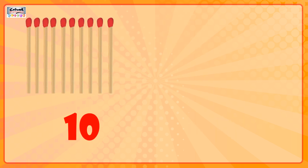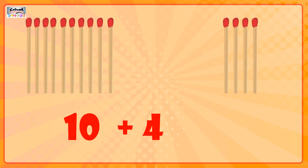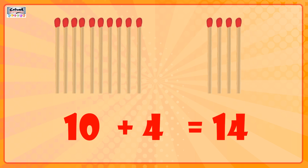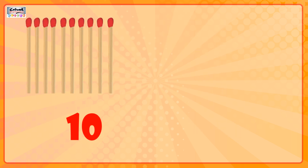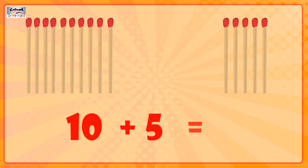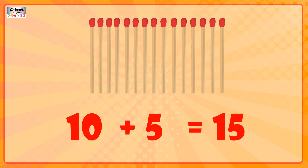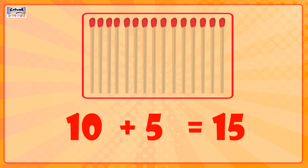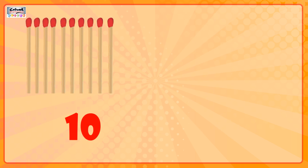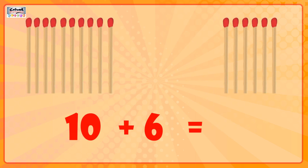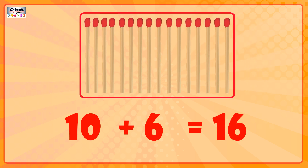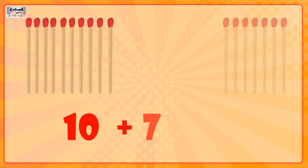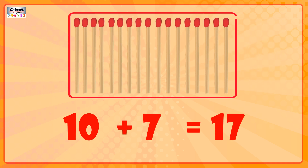10 matchsticks plus 4 matchsticks is equal to 14 matchsticks. 10 matchsticks plus 5 matchsticks is equal to 15 matchsticks. 10 matchsticks plus 6 matchsticks is equal to 16 matchsticks. 10 matchsticks plus 7 matchsticks is equal to 17 matchsticks.